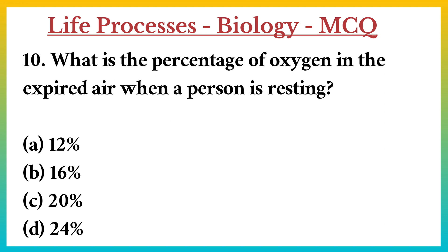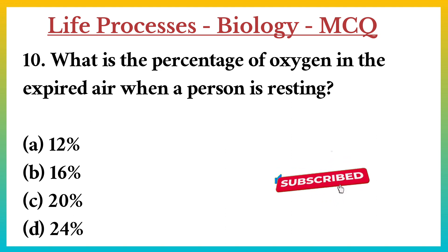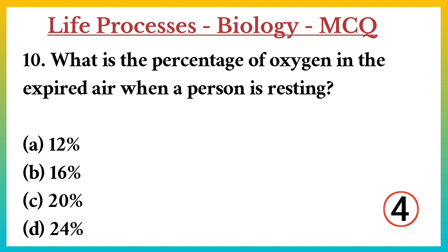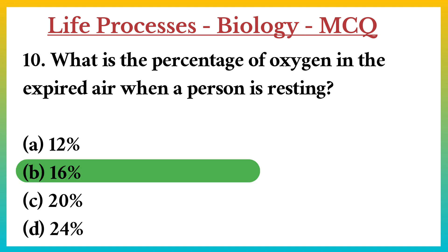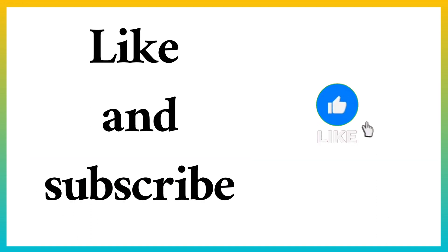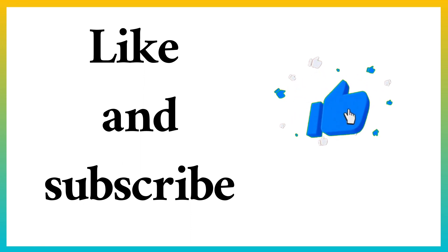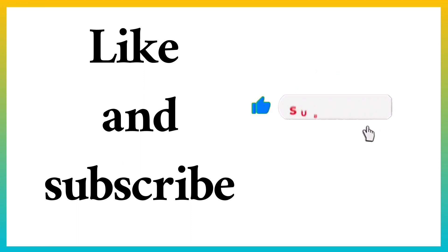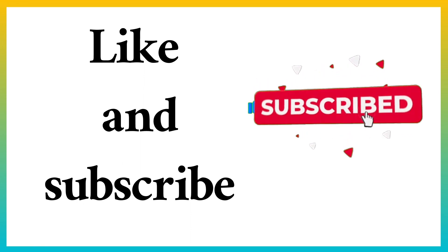Question number 10. What is the percentage of oxygen in the expired air when a person is resting? A. 12%. B. 16%. C. 20%. D. 24%. Answer: B. 16%. Dear students and friends, how many answers did you guess? Share with me, and like and subscribe for more videos.